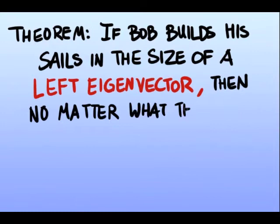Theorem: If Bob builds his sails in the size of a left eigenvector, then no matter what the wind's velocity is, he will live to see his family once again. Proof: